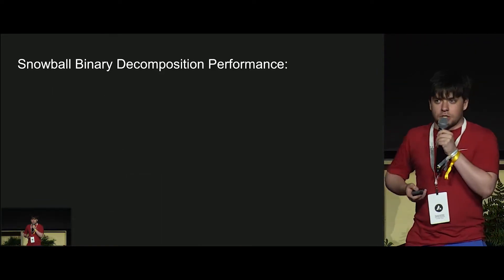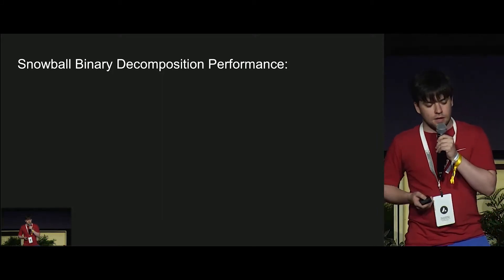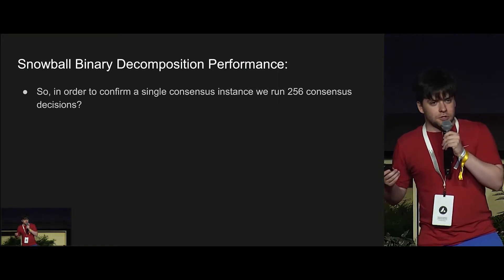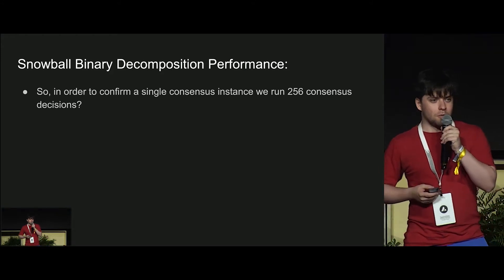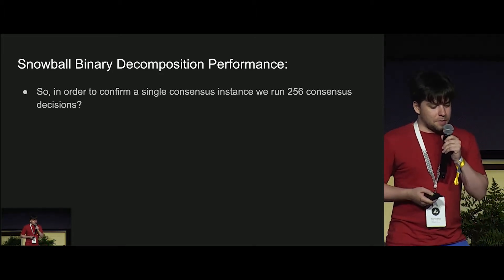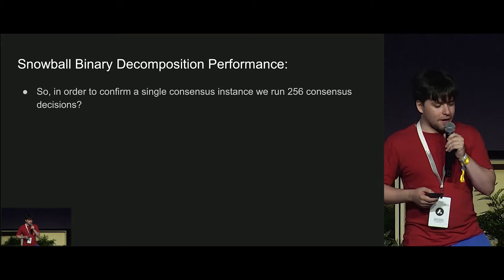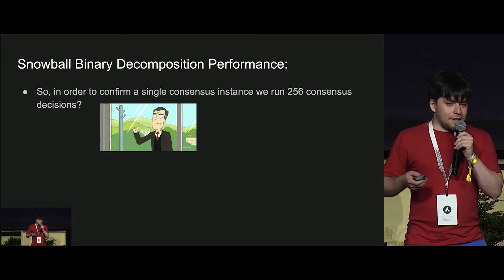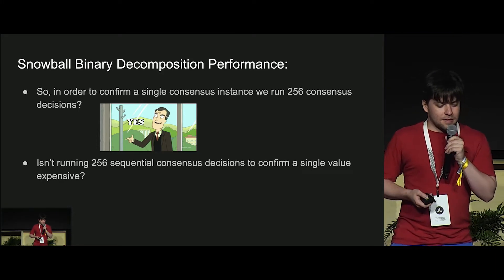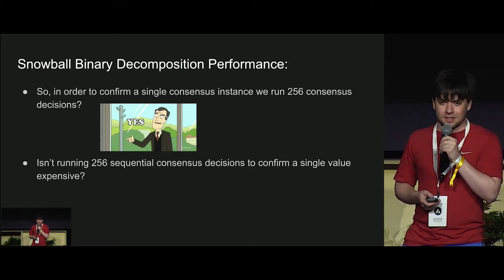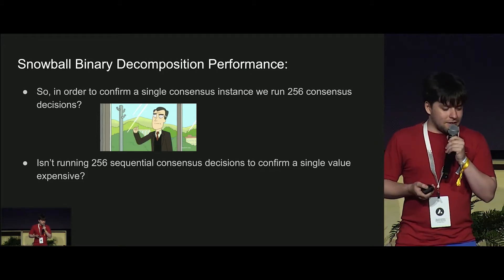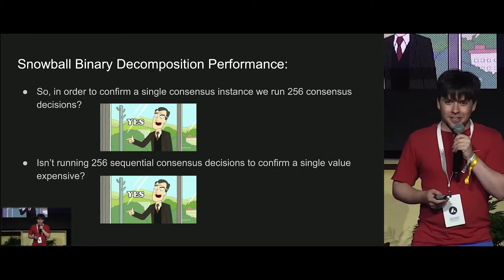One interesting question that comes out of this is performance. You might have already come to the question: you're turning a consensus problem where you have to decide the next block into 256 consensus problems, which ends up being potentially problematic. And you might follow up and say, isn't that kind of slow — running 256 consensus instances one after another? Because consensus is a hard problem. And the answer is yes, it really is really slow. Increasing your confirmation time from one second to 250 seconds in the happy path is suboptimal.